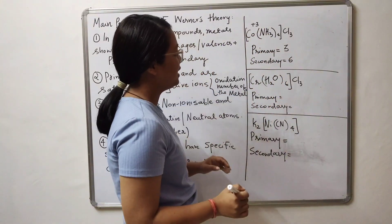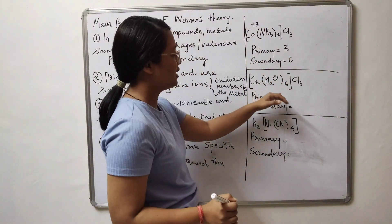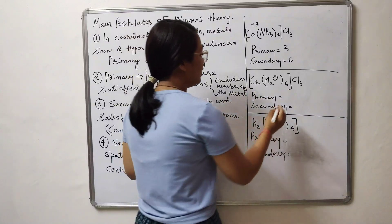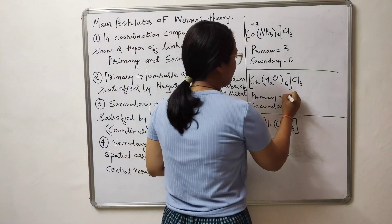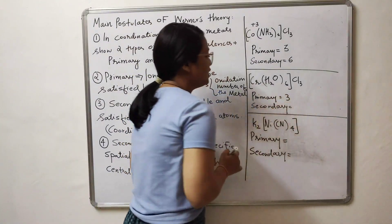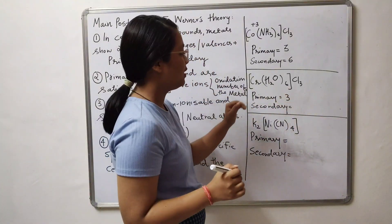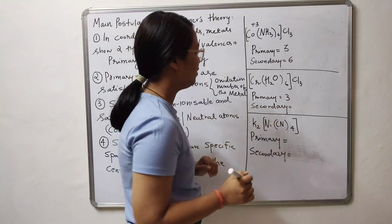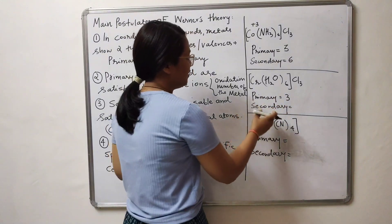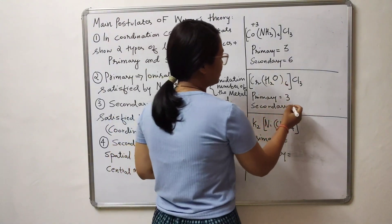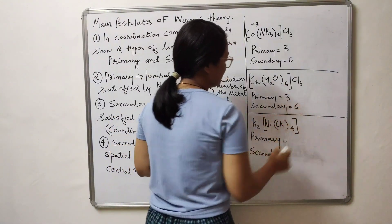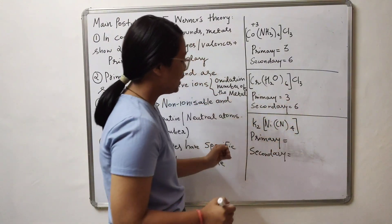In the second example, it is a hexa-aqua complex. Chromium is going to have an oxidation state of +3. Primary valency will be 3, and secondary valency — the coordination number — is 6.